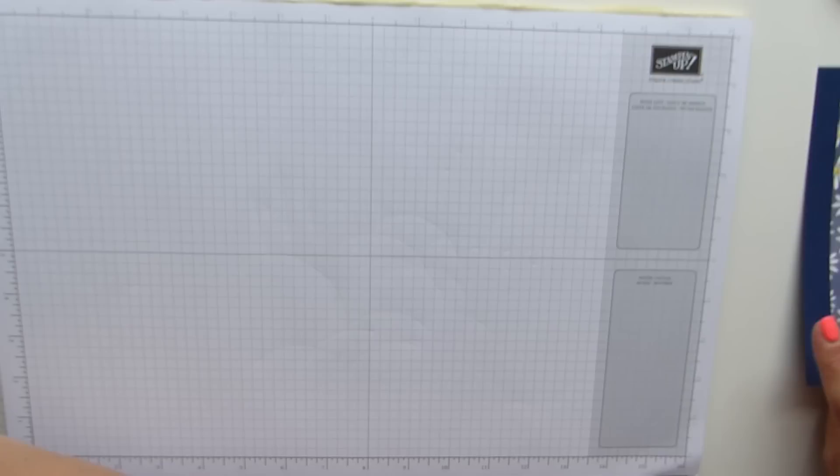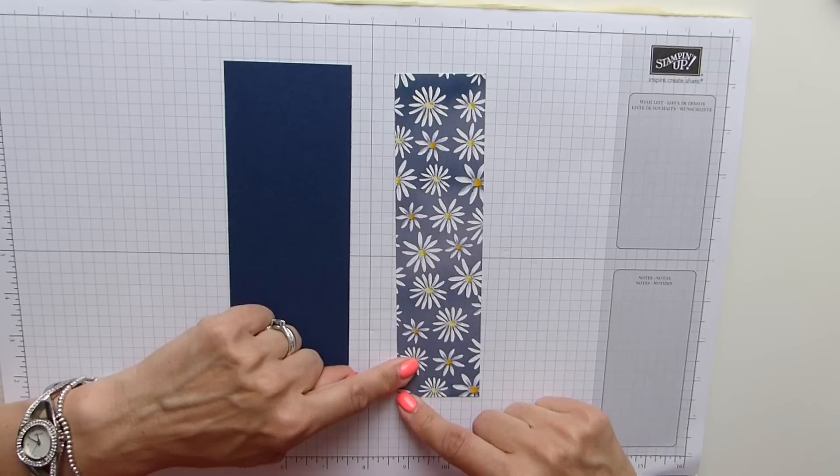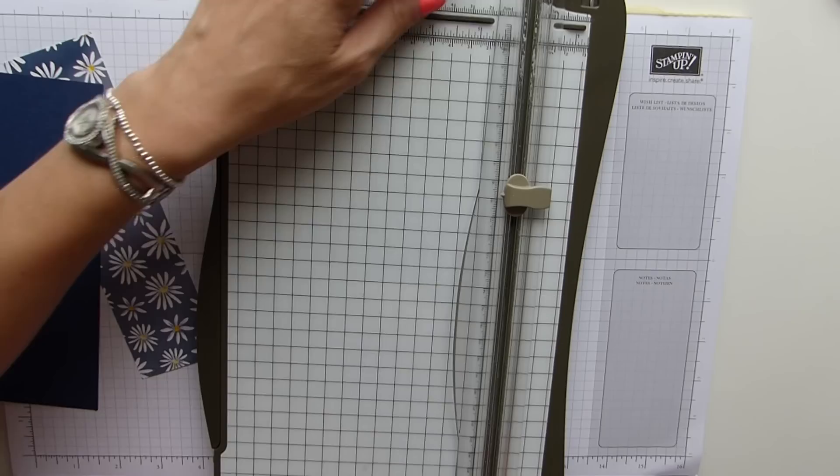So you need two pieces of one cardstock, one DSP. Your cardstock needs to be seven and a half by two and three quarter inches. And your DSP needs to be seven and a half by two inches. You don't need your scoreboard for this. You can do everything on your trimmer, which I think is great.